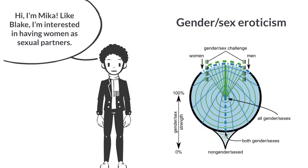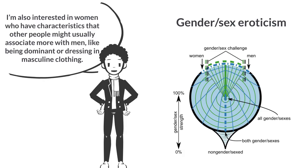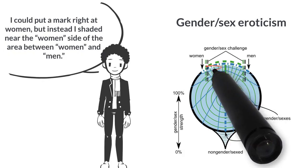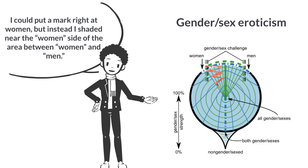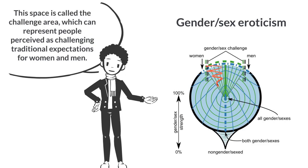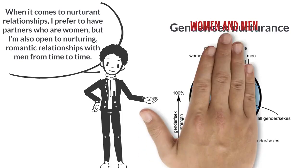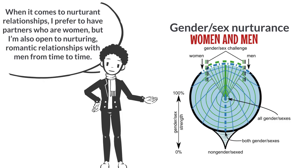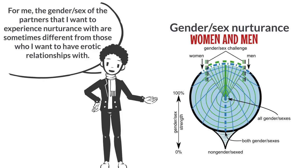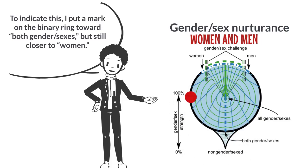Hi, I'm Mika. Like Blake, I'm interested in having women as sexual partners. I'm also interested in women who have characteristics that other people might usually associate more with men, like being dominant or dressing in masculine clothing. I could put a mark right at women, but instead I shaded near the women's side of the area between women and men. This space is called the challenge area, which can represent people perceived as challenging traditional expectations for women and men. So I shaded here to represent the broad range of women I'm interested in having erotic relationships with. When it comes to nurturant relationships, I prefer women but I'm also open to nurturing romantic relationships with men from time to time, so I put a mark on the binary ring toward both gender sexes, but still closer to women.